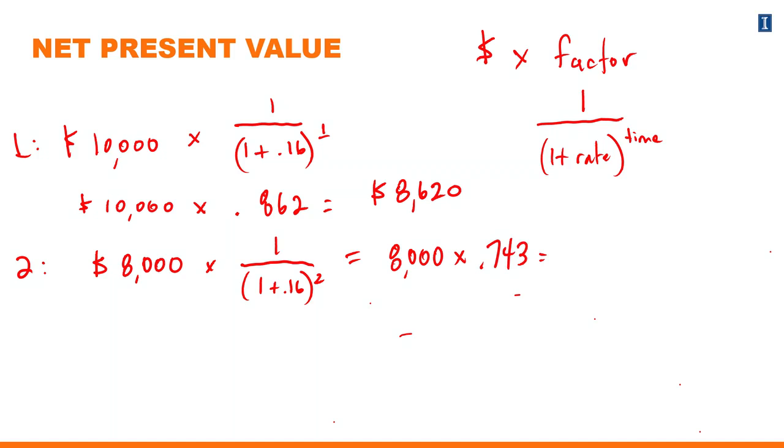With some rounding involved there, the $8,000 received at the end of year 2 in today's value is equal to $5,944.